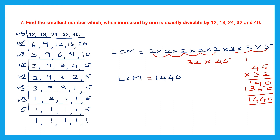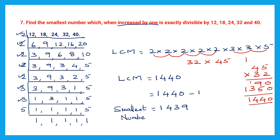So we have found the LCM. But the question says: find the smallest number which when increased by 1 is exactly divisible. Increased by 1 means the number has become 1440 after adding 1. So to get the actual number, we subtract 1 from 1440: 1440 − 1 = 1439. If I increase 1439 by 1, I get the LCM, 1440. So the final answer is 1439.